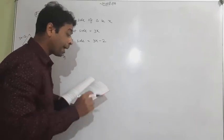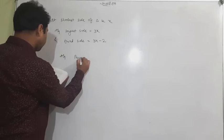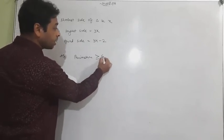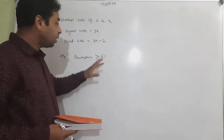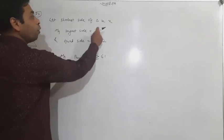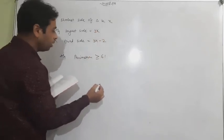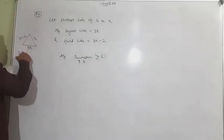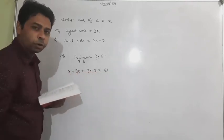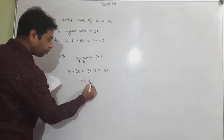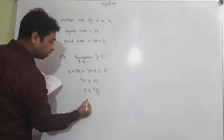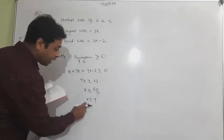The perimeter is at least 61 cm — 'at least' means greater than or equal to. Perimeter = sum of all sides = x + 3x + (3x − 2) = 7x − 2. So 7x − 2 ≥ 61, which gives 7x ≥ 63, so x ≥ 63/7 = 9. Therefore x ≥ 9.